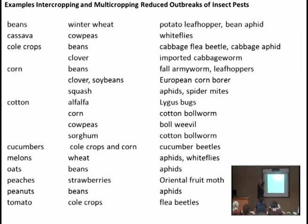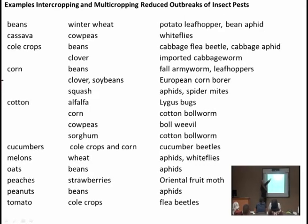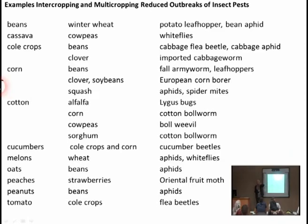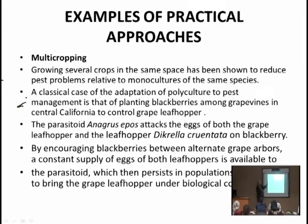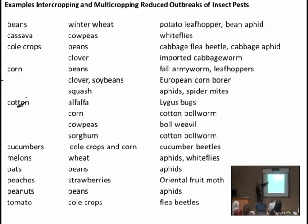الفاصولياء (beans) تزرع مع القمح الشتوي (winter wheat) لمكافحة potato leaf hopper وbean aphids. الكاسافا - وهو محصول يشبه البطاطا ومصدر للكربوهيدرات يُزرع في أفريقيا - تزرع معه الكاوبيز لمكافحة الذبابة البيضاء (whitefly). محاصيل الكول (الملفوف وعائلته الصليبية) تزرع بينها الفاصولياء أو الكلوفر لمكافحة cabbage flea beetles وcabbage aphids وcabbage worms.